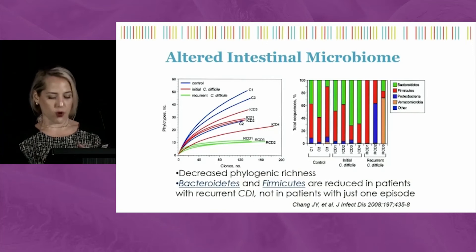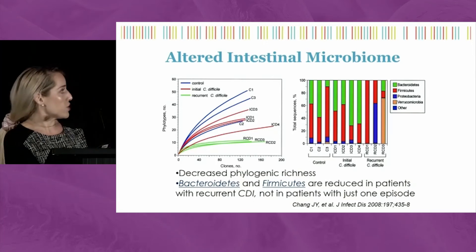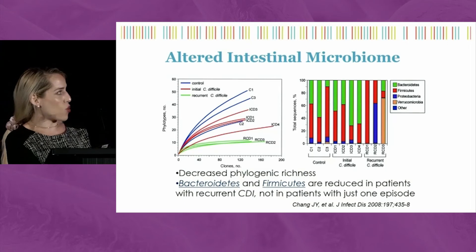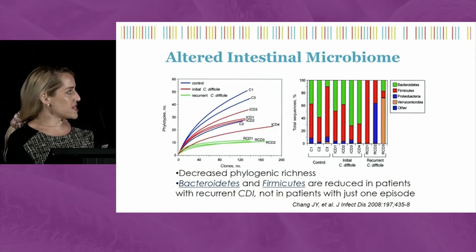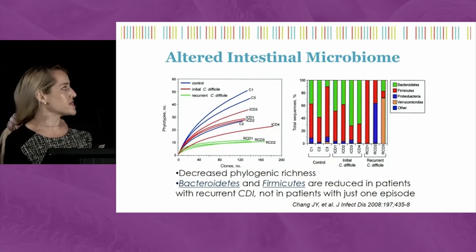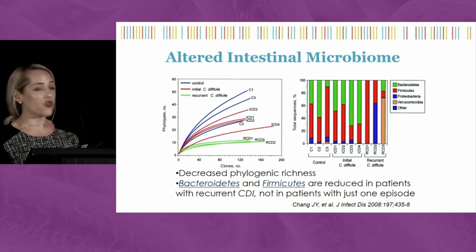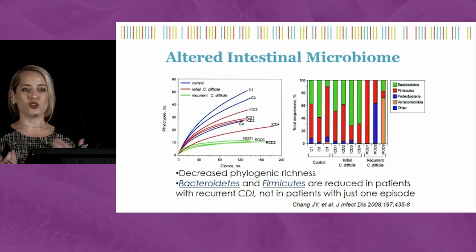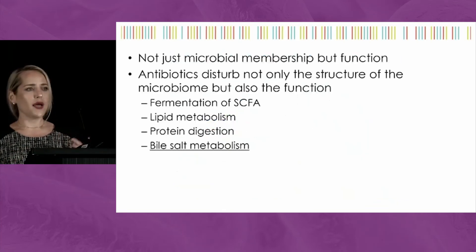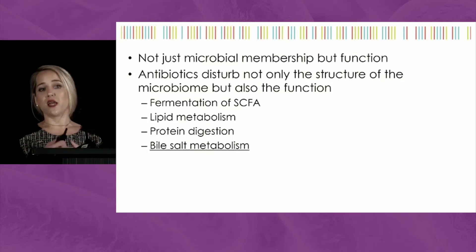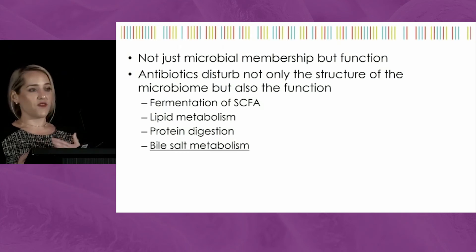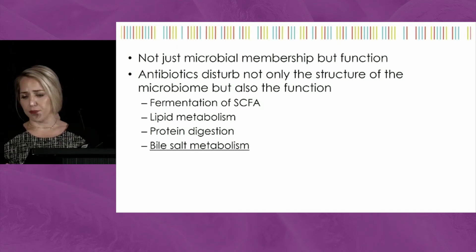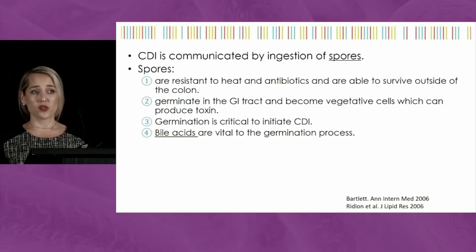An altered intestinal microbiome is certainly at play here. On a microbiome plot, you want to be in the corner with a lot of diversity and richness. By the time you have your first C. diff infection, you already have decreased richness in the number of phyla present, and by the time you have recurrent C. diff, you no longer have the tools to overcome the infection. It's not just which bugs are present—microbial membership—but really the function of your microbiome, specifically bile salt metabolism.